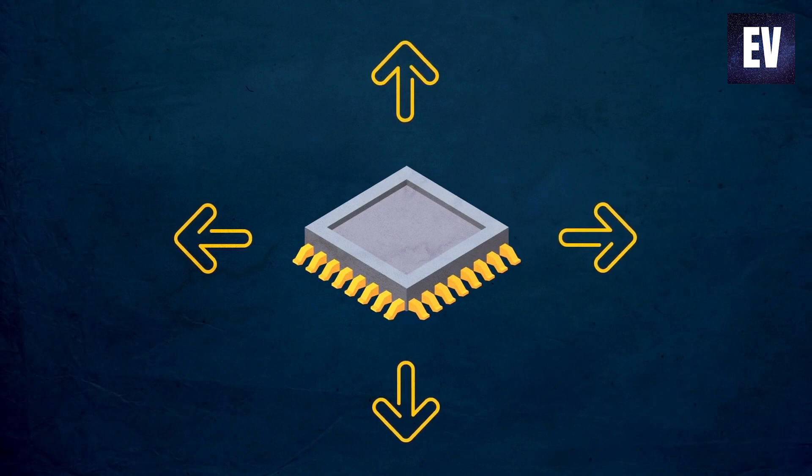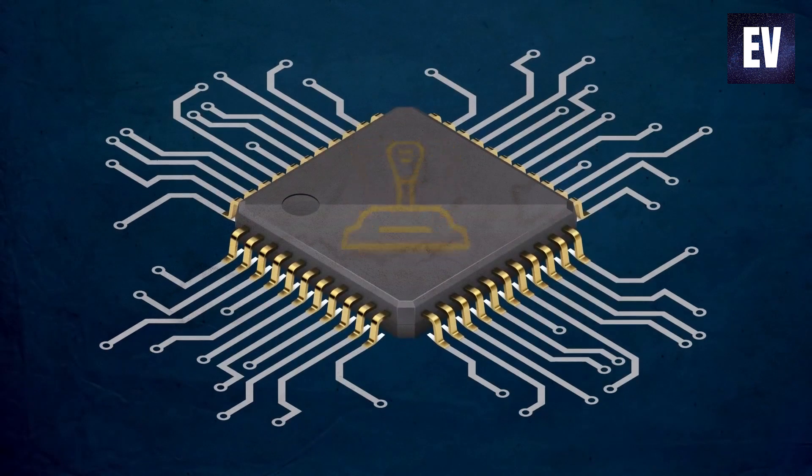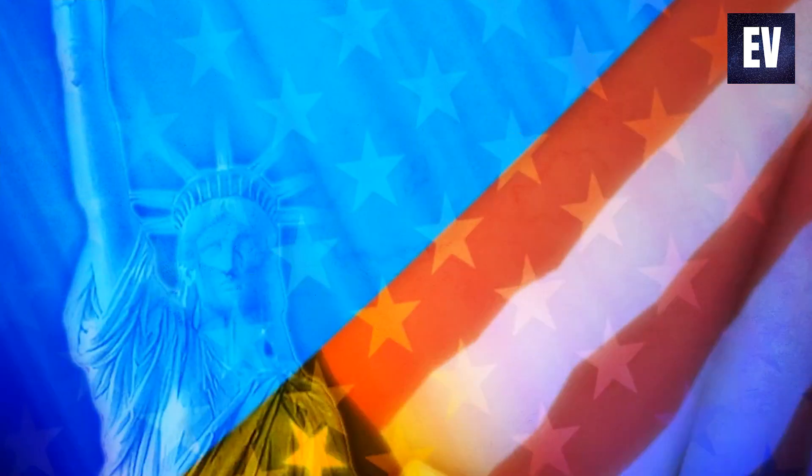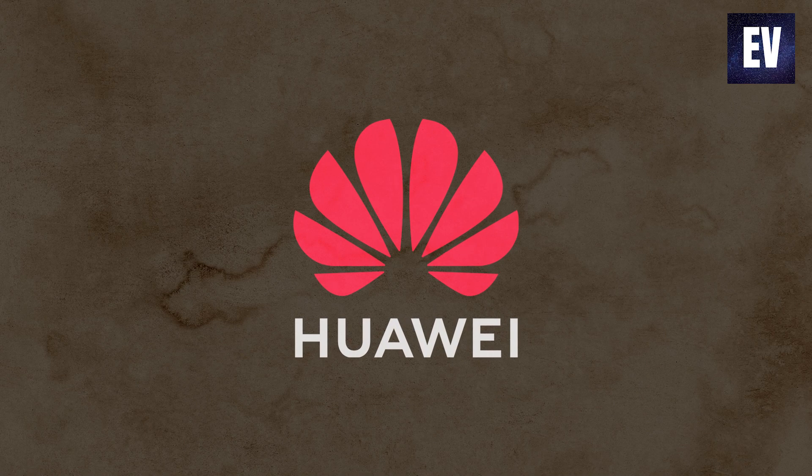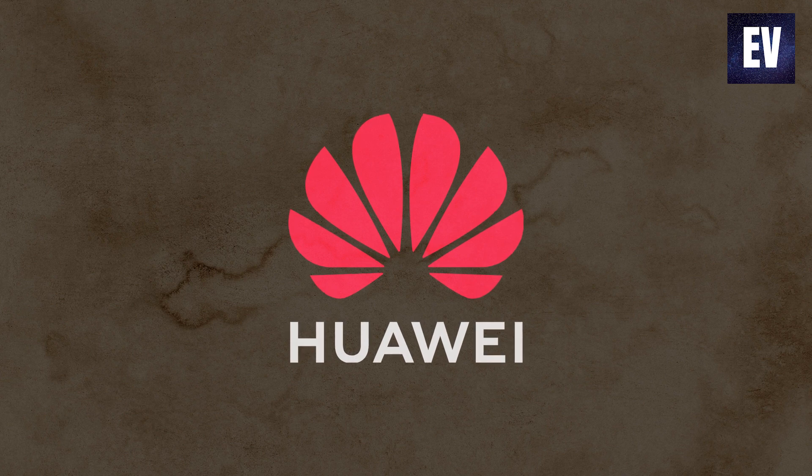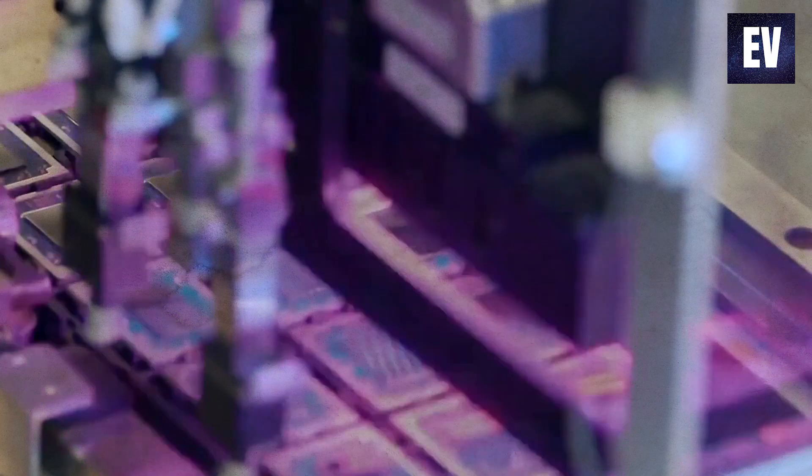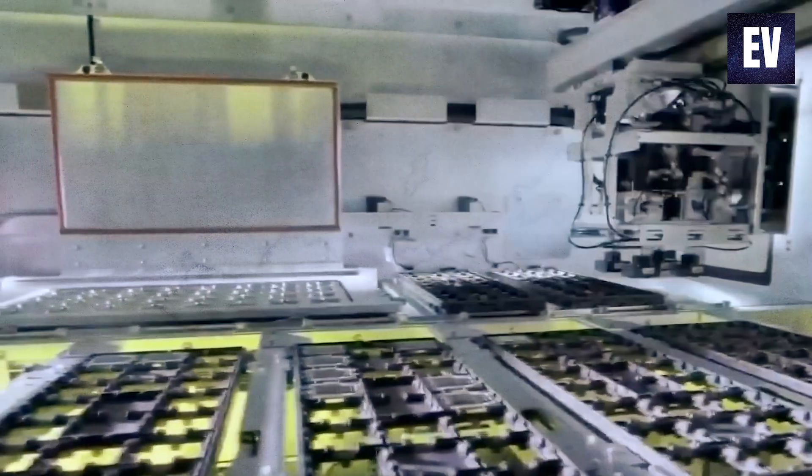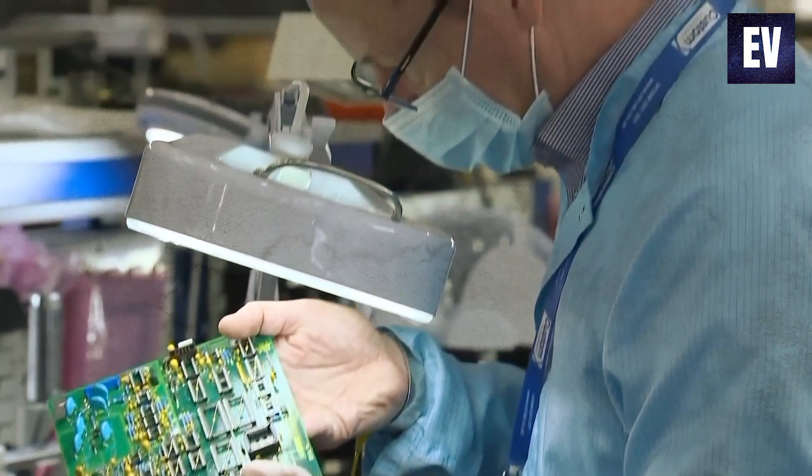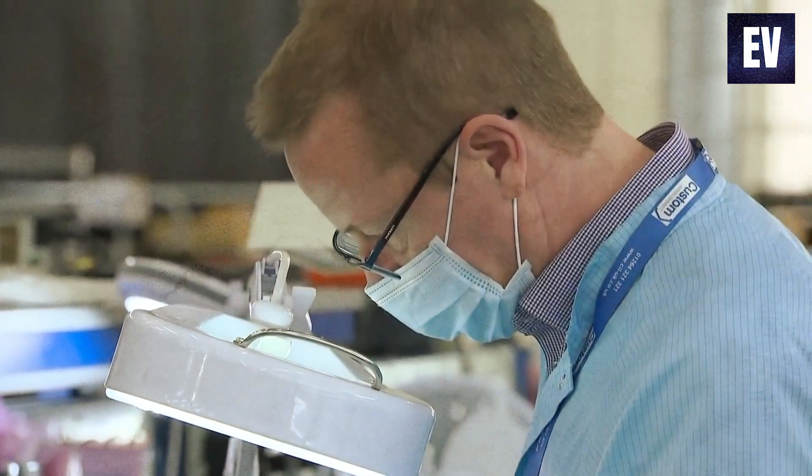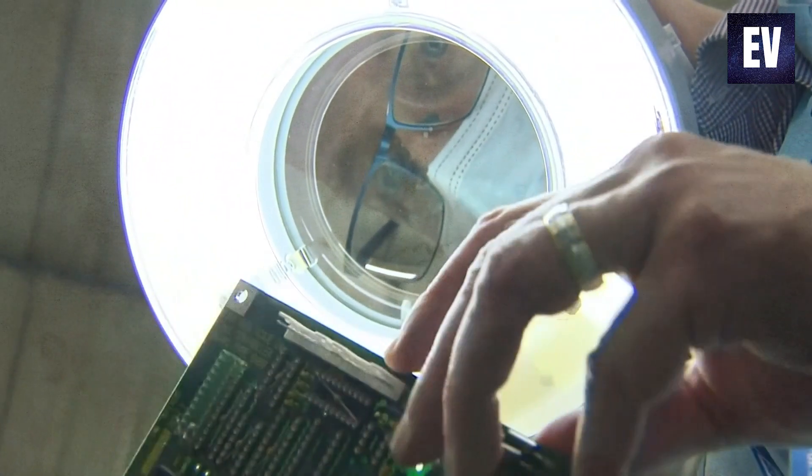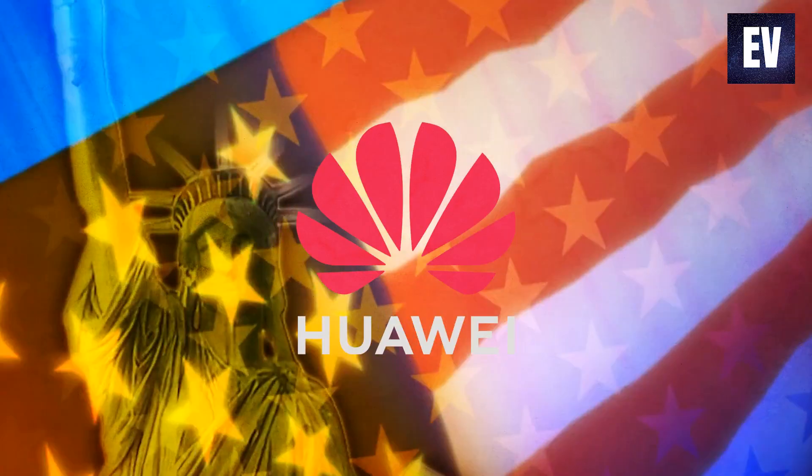The chips were often based on cutting-edge technology, and they assisted the Chinese smartphone behemoth in becoming one of the world's largest participants in the smartphone market. The United States, on the other hand, placed Huawei on a trade blacklist known as the entity list in 2019, thus cutting the Chinese business off from certain US technology. Last year, the United States government issued a rule requiring foreign manufacturers using American chip-making equipment to obtain a license before they may sell chips to Huawei.